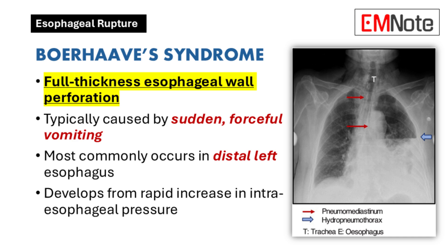Boerhaave syndrome is a specific type of esophageal injury involving a full-thickness tear in the esophageal wall. This condition typically occurs after a sudden and significant increase in pressure within the esophagus. The most frequent trigger is intense, forceful vomiting, which generates enough pressure to rupture the esophageal wall. These tears are most often found in the lower part of the esophagus, particularly on the left side.